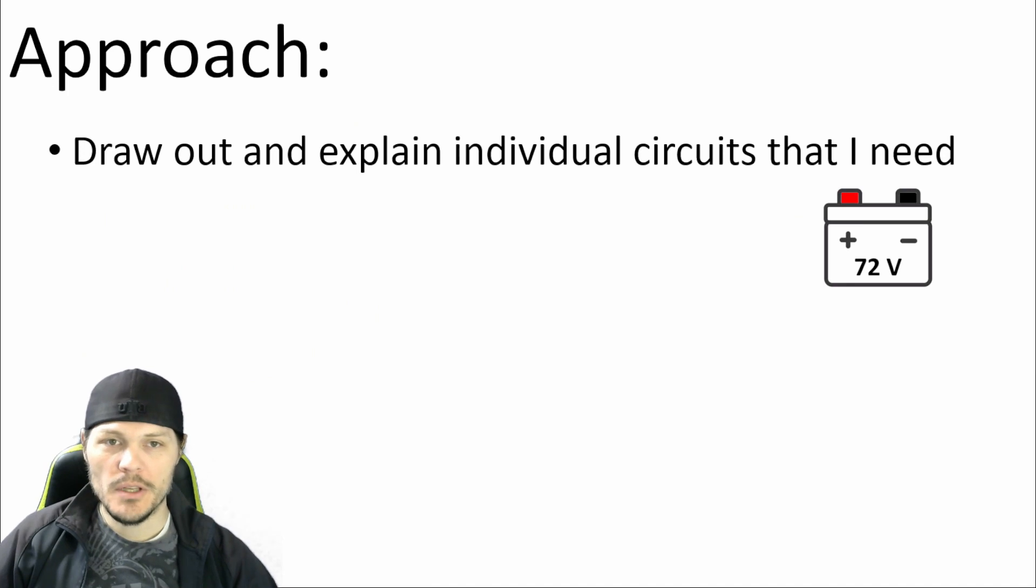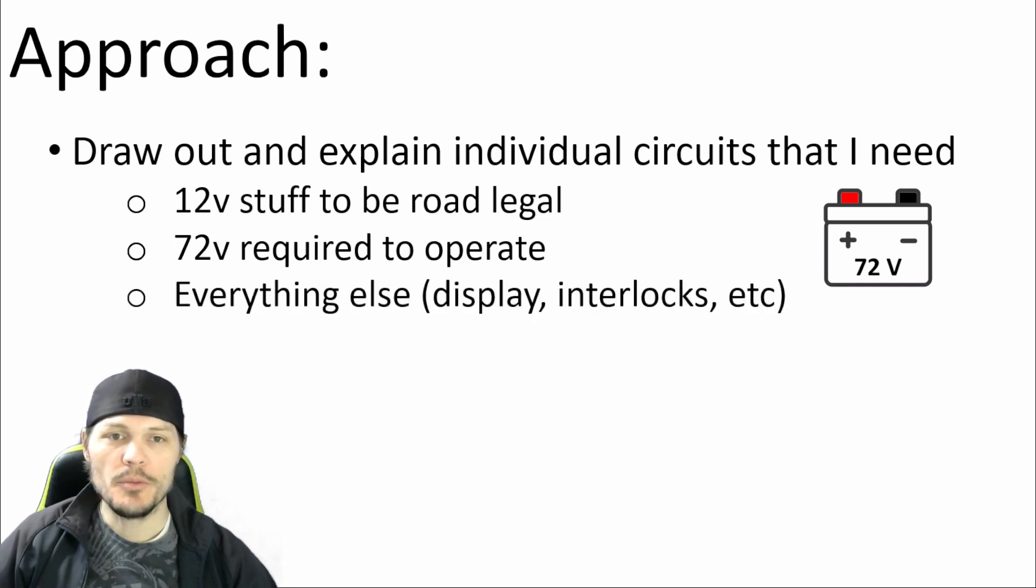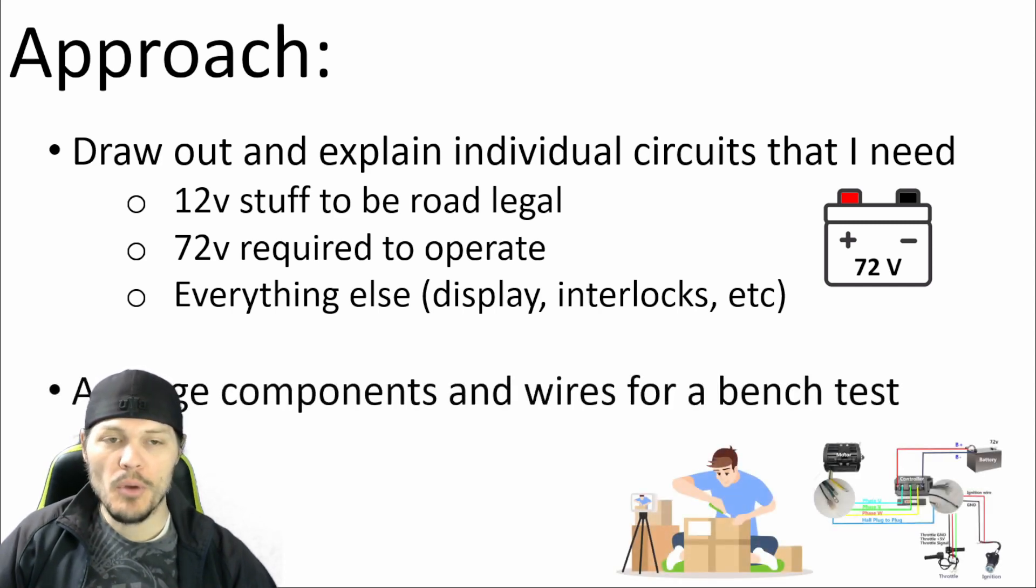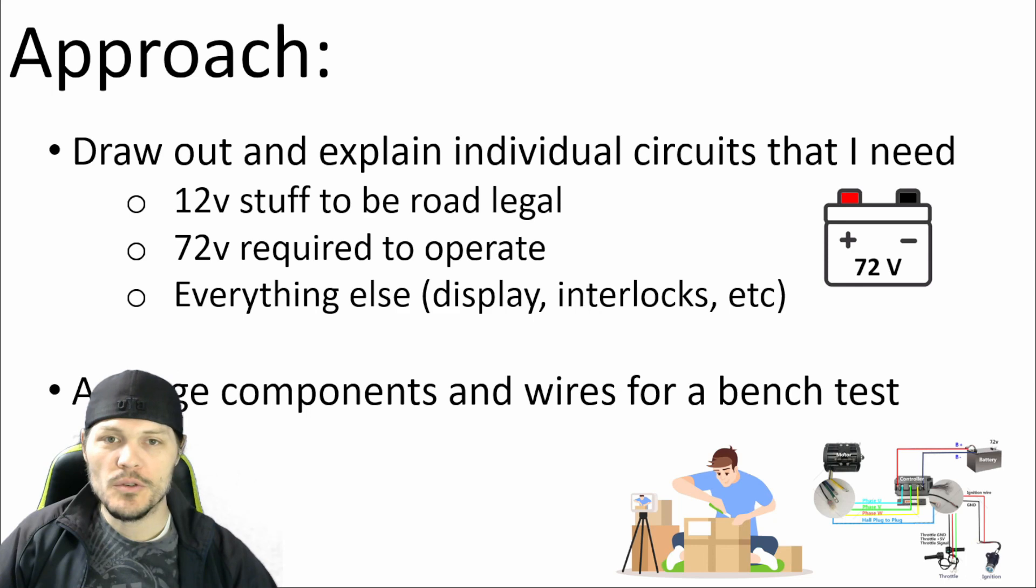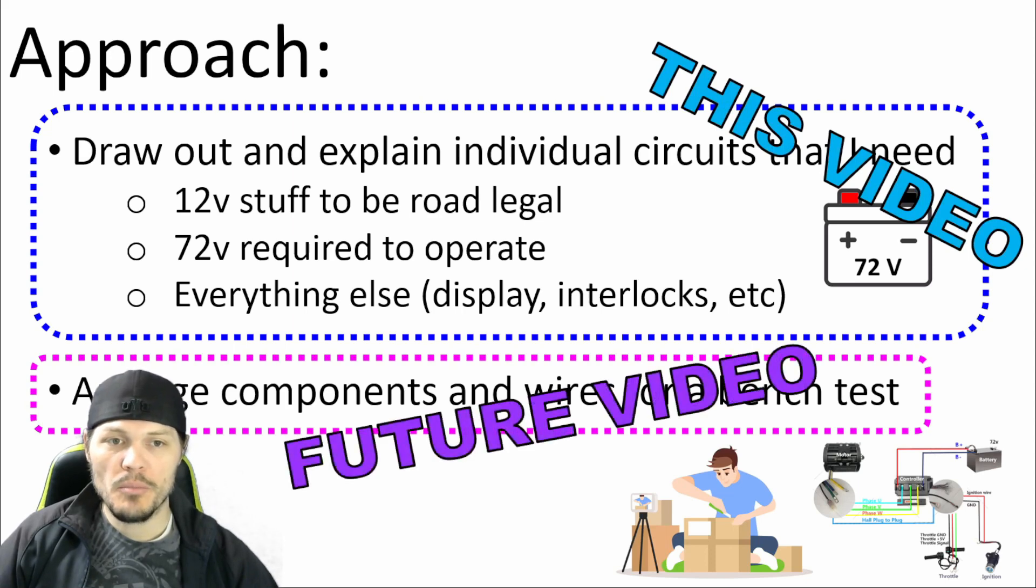My approach with this is going to be draw and explain individual circuits that I know I need, and that's going to be broken out into three separate sections. First is the 12 volt stuff that my bike needs to be road legal, like the headlights and the taillights and the blinkers and whatnot. And then I'm going to show a 72 volt diagram that has just a minimum number of components, minimum number of wires, just bare bones. What do I need to spin the motor? And then we'll add in a bunch of other stuff such as communication to the display, interlock circuits, switches, fuses, whatever. The next step will be to physically arrange all the components and wires on the workbench to actually perform a bench test. Now that's a little too much scope to get done in one video. And so this video is going to be just the drawing out and explaining individual circuits. And then in some future video, we're going to unbox a bunch of components and then physically lay them out on the workbench and wire them together and actually perform a bench test.